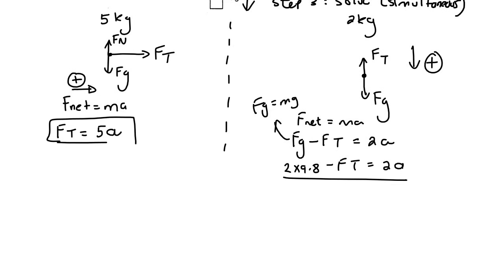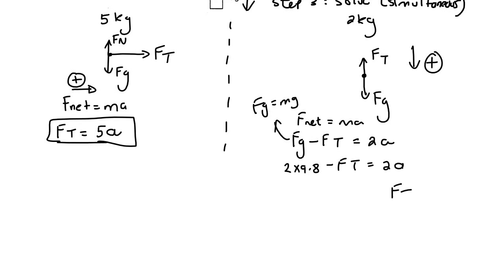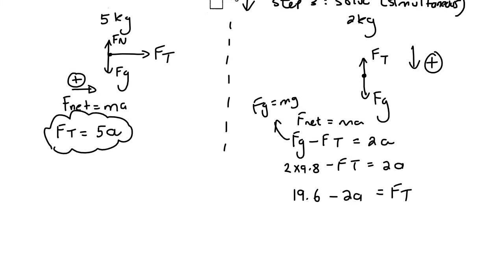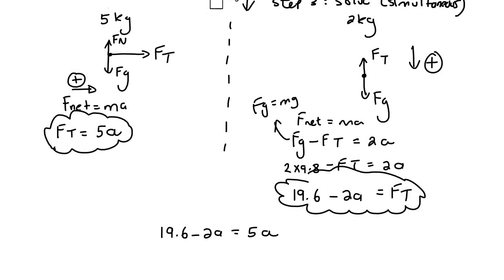This first equation already has FT by itself. So I take the second equation and also get FT by itself: FT equals 19.6 minus 2a. I then make these two equal to each other: 19.6 minus 2a equals 5a. Solving for a, we should get 2.8 meters per second squared. You don't have to give a direction because one object is going right and the other is going down.